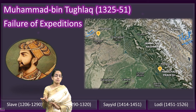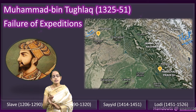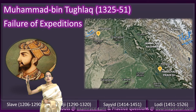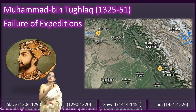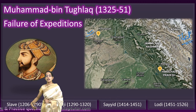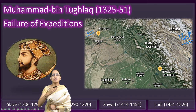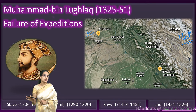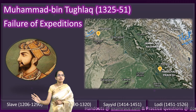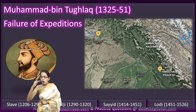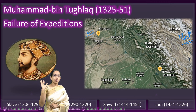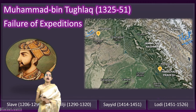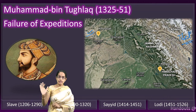His repeated failures made him highly unpopular. Numerous revolts broke out — in the east in Bengal, in the west in Gujarat and Sindh, and in the south in Tamil Nadu and Warangal. By the 14th century, Bengal in the east and Sindh in the west were lost. All regions south of the Narmada were also lost. He was left with a very small territory. In the south, the Bahmani and Vijayanagara kingdoms rose as independent powers. Despite being a learned scholar and great mathematician, his practical policies were very weak.